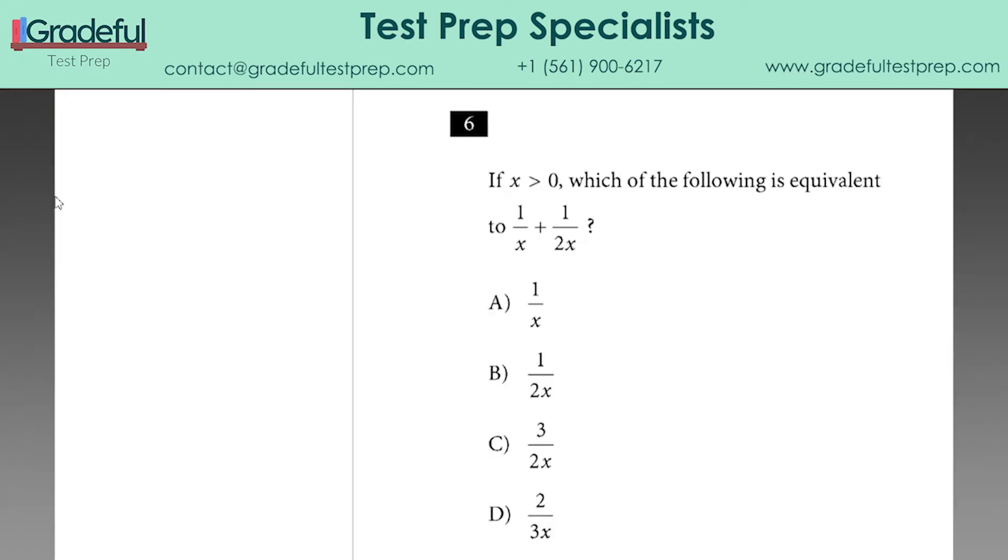Number 6 is really just about common denominators. We have 1 over x plus 1 over 2x, and we need the same denominators to proceed. Let's multiply the first one by 2 over 2. This gives us 2 plus 1 all over 2x. Add the numerator and we get 3 over 2x, which is answer choice C for number 6.